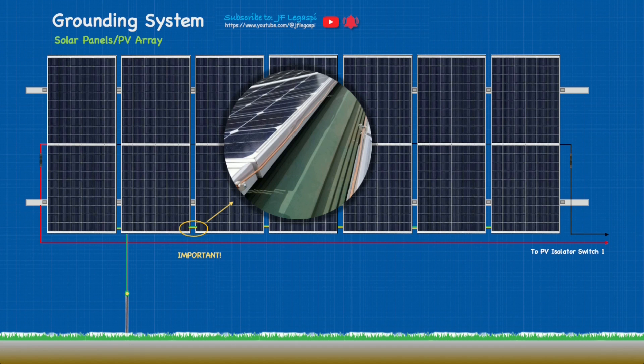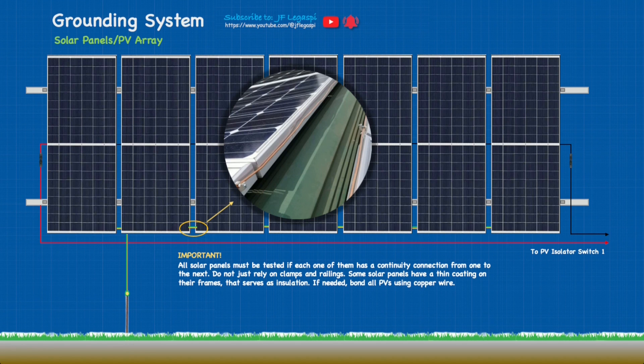And that is very important. All solar panels must be tested if each one of them has a continuity connection from one to the next. Don't just rely on clamps and railings, because some solar panels have a tin coating on their frames that serves as insulation. If needed, bind all PVs using copper wire. Now you don't have to do this if you are 100% sure that all the solar panels have continuity to each other.